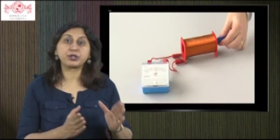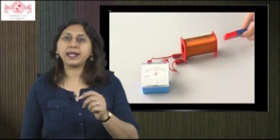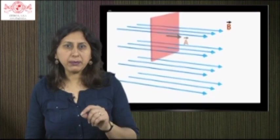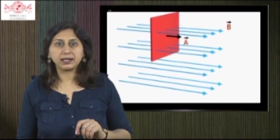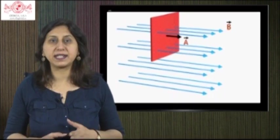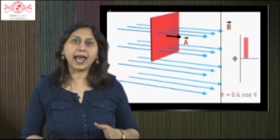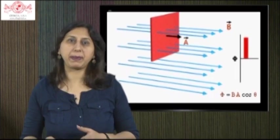Electromagnetic induction is the production of a potential difference or voltage across a conductor when it is exposed to a varying magnetic field. The magnetic field through a loop can be changed either by changing the magnitude of the field or by changing the area of the loop. To quantitatively describe these changes, magnetic flux is defined as Φ = BA cos θ, where θ is the angle between B and the direction perpendicular to the plane of the loop.